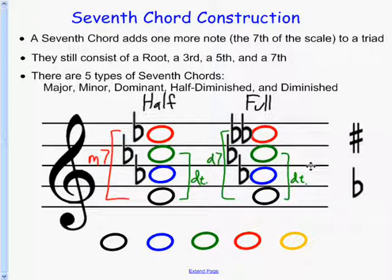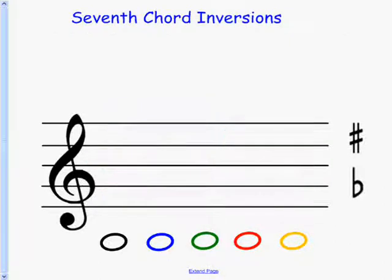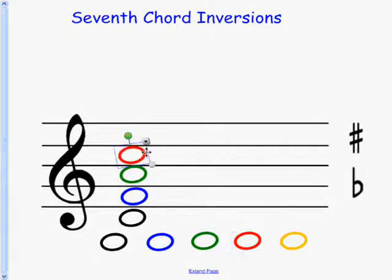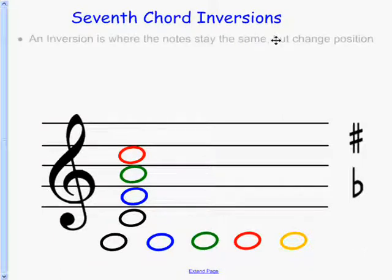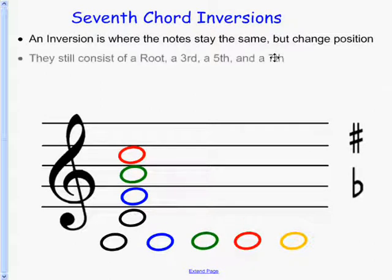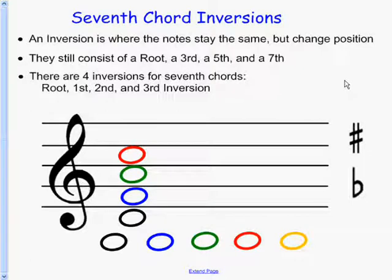There are lots of things that go along with this — this is an introduction on how you build them. Seventh chords can have the same concept of inversions as triads. I'm going to show you a basic one using a D seventh chord. This is actually a D minor seventh chord, because you have a minor seventh between the D and the C, and you have a minor chord because there's no F sharp. An inversion is where the notes stay the same but they change position, just like on a triad. They still consist of a root, a third, a fifth, and a seventh, but there are four different types of inversions for seventh chords, whereas there are only three for triads.